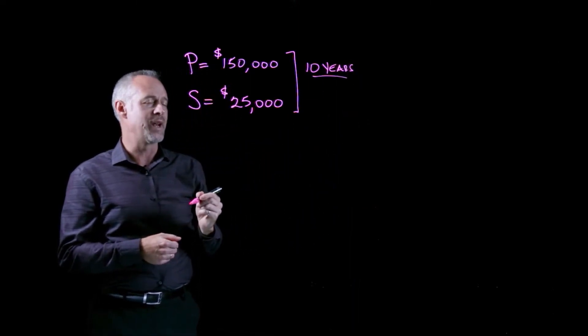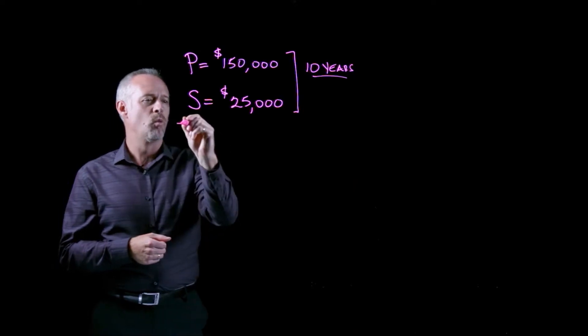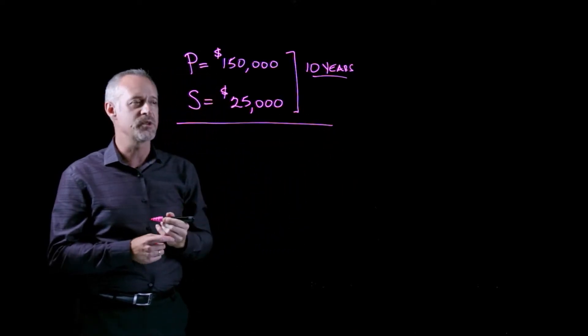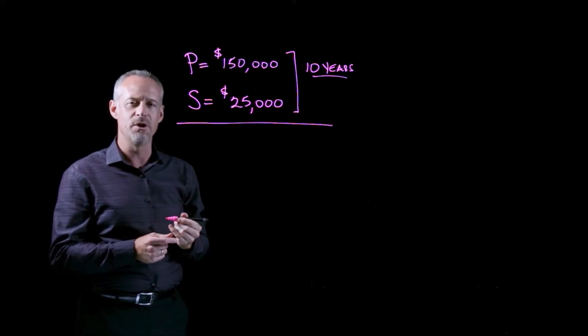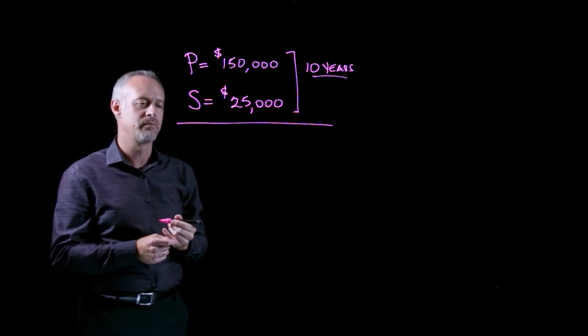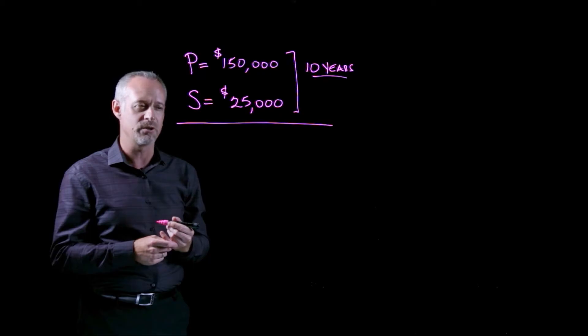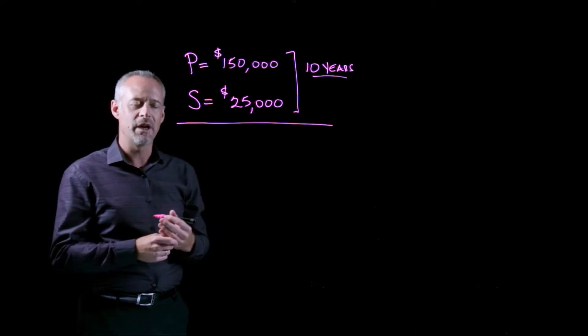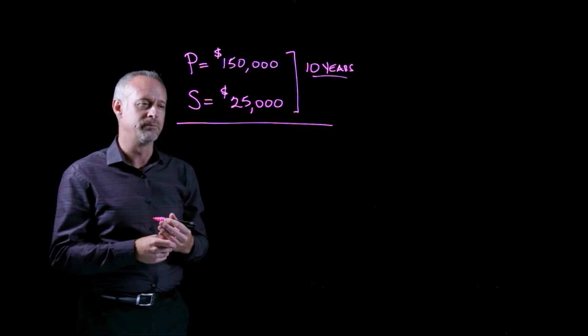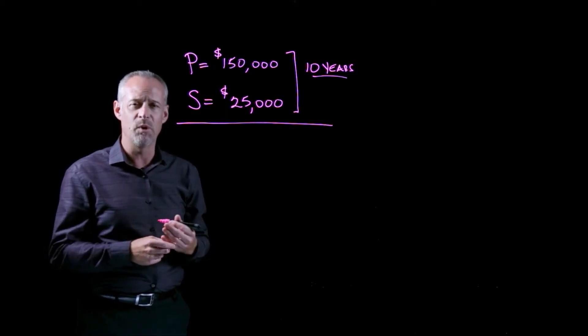So the question asks, what is the book value of this equipment after four years using something called straight-line depreciation? Now straight-line depreciation is the simplest of all forms of depreciation calculations, and I think it's appropriate to use as an introduction to the idea.